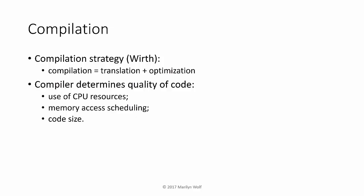A better understanding of how compilers optimize code helps us write programs that meet our performance requirements. Nicholas Wirth famously described compilation as this formula: compilation equals translation plus optimization. Compilers are very important to the software process because they determine the quality of the code, the amount of CPU resources required, memory accesses, and code size.